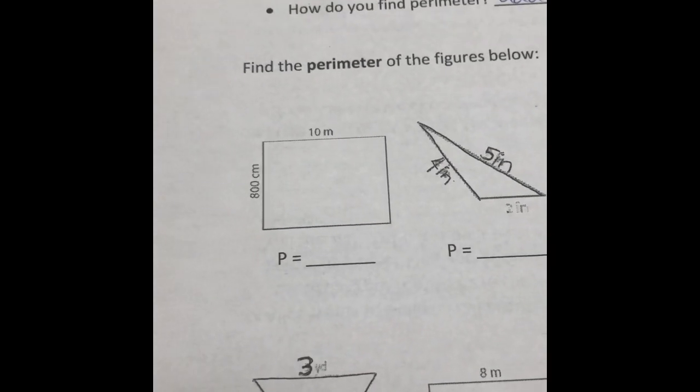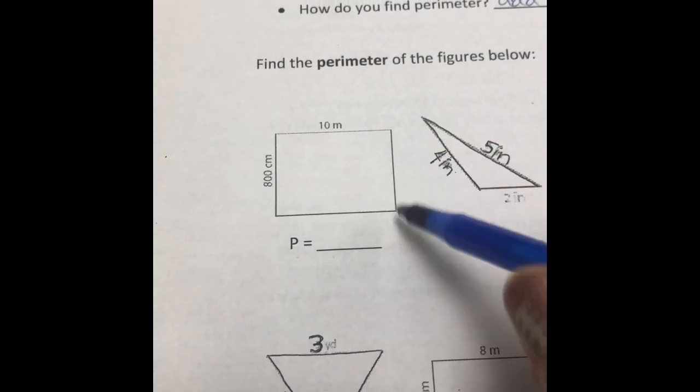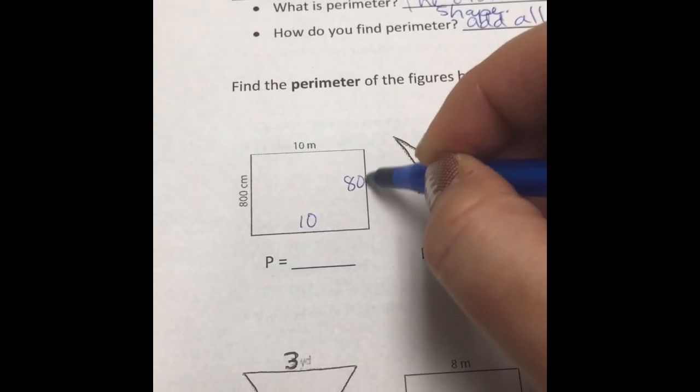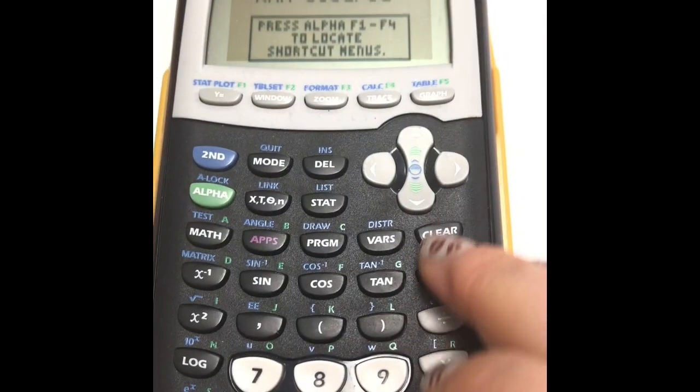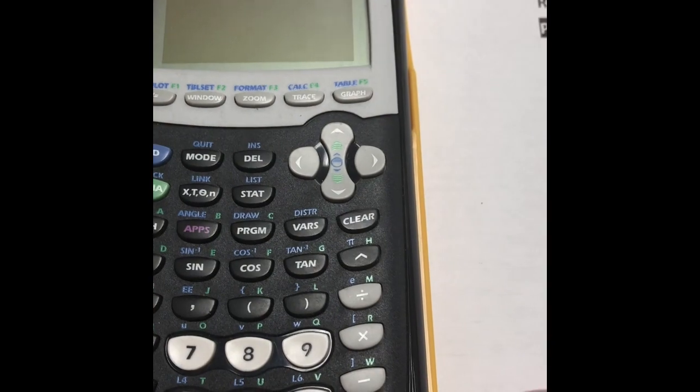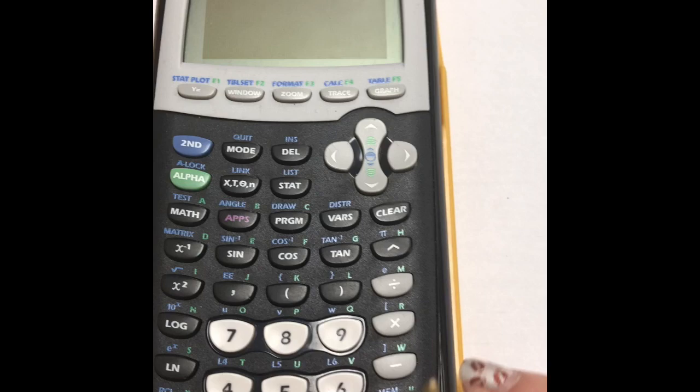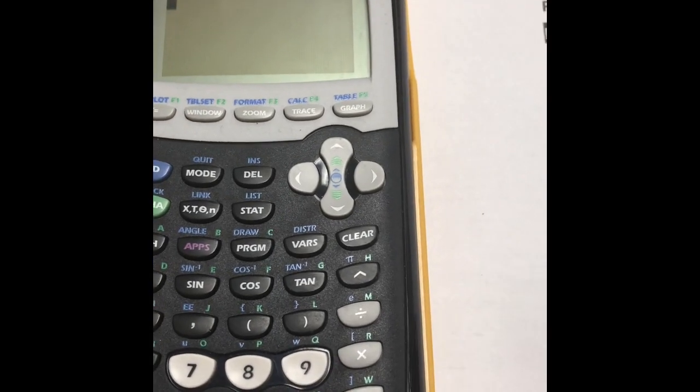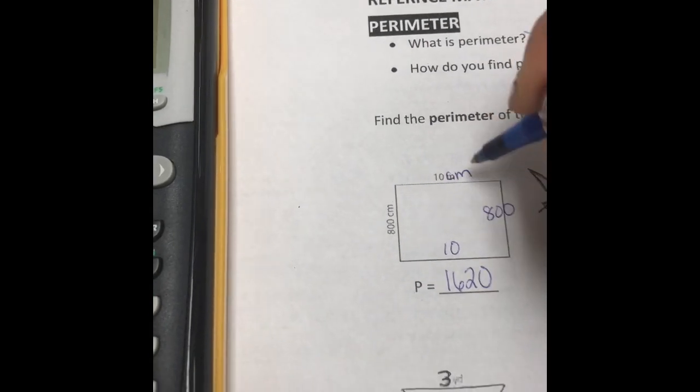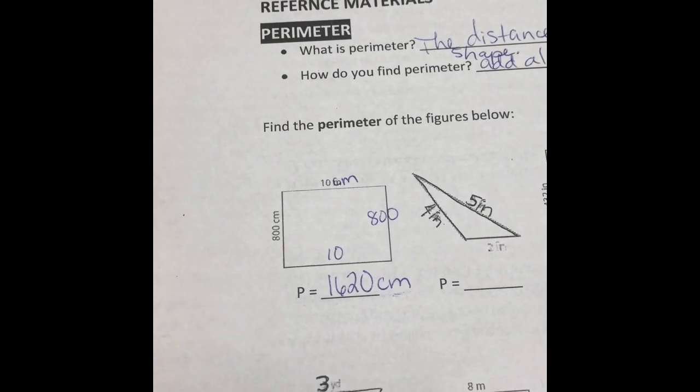On this first one, the biggest misconception is that people will try and tell me that the perimeter is 10 plus 800. But there are four sides to this shape, so you'd have to do 10 plus 10 plus 800 plus 800. So we've got our calculator, and make sure you clear your RAM, and we're going to use our calculator. 10 plus 10 plus 800 plus 800 equals 1,620. And this is a typo. This is supposed to say centimeters. Don't leave your numbers naked. Always make sure that you have a measurement on there.